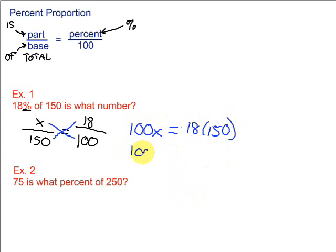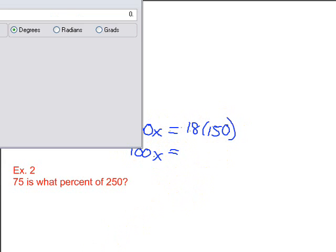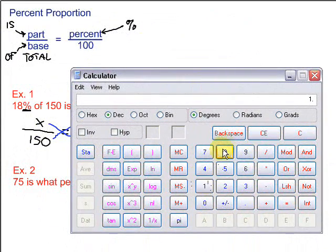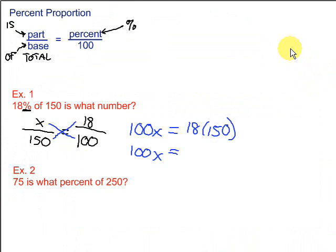Then we simplify, 100x equals 18 times 150. Now let's pull up the calculator and we'll figure that out. 18 times 150 equals 2700. So here we have 2700.